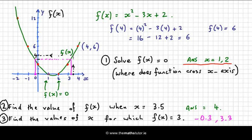The second one, find the value of f(x) when x = 3.5. So you go to 3.5, which is here, and we go up to meet the graph and across. And we find that the value of f(x) is 4. So the answer is 4.